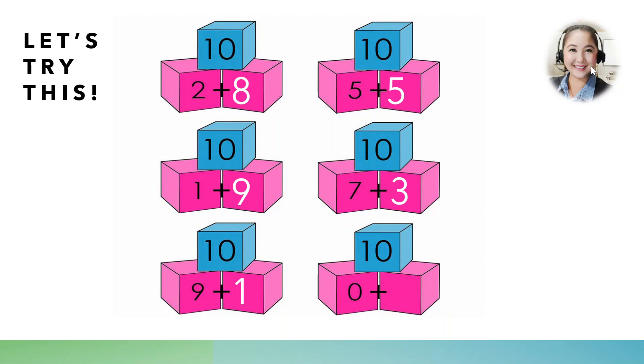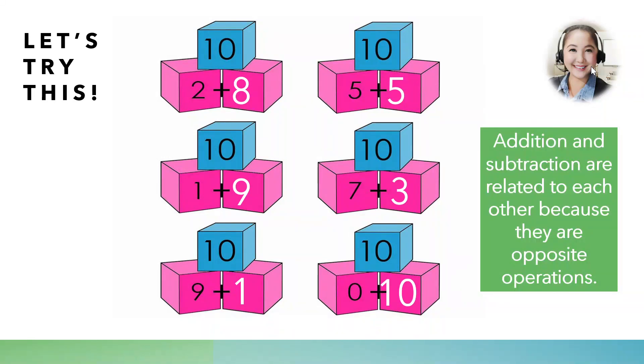Now, I know some of you thought of another technique to get the other parts. Who among you here used subtraction? Yes, you are right! We can use subtraction to get the other parts. Just like 10 minus 2 gives you 8. 10 minus 1 gives you 9. So, children, addition and subtraction, they are opposite operations. They are related to each other. Okay, you can use addition to check your answer in subtraction and use subtraction to check the answer in addition.